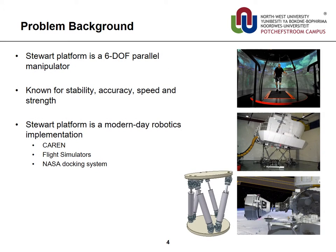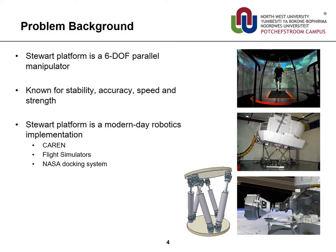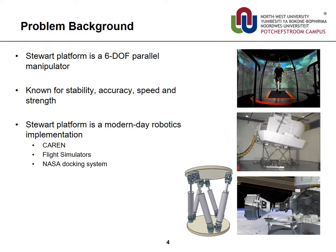The Stewart platform is a six degrees of freedom parallel manipulator which can mimic any movement. It is also widely known for its stability, accuracy, speed and strength. The Stewart platform is a modern day robotics implementation used in systems such as the computer assisted rehabilitation environment, flight simulators, and also the NASA docking system.